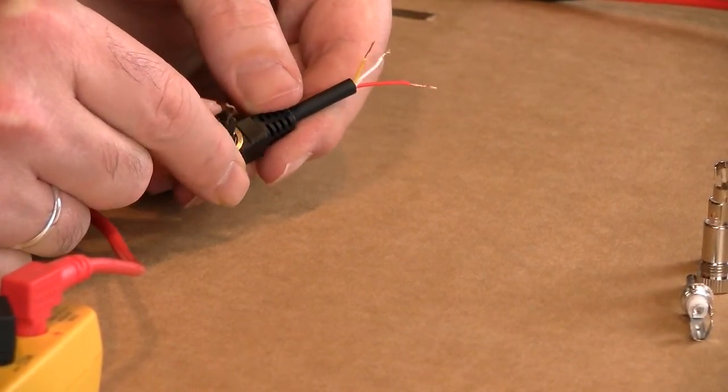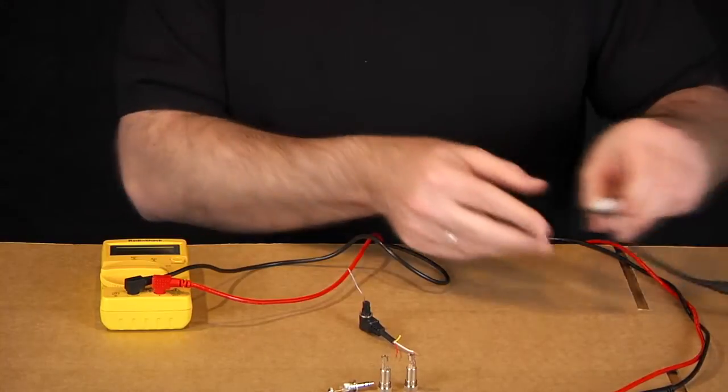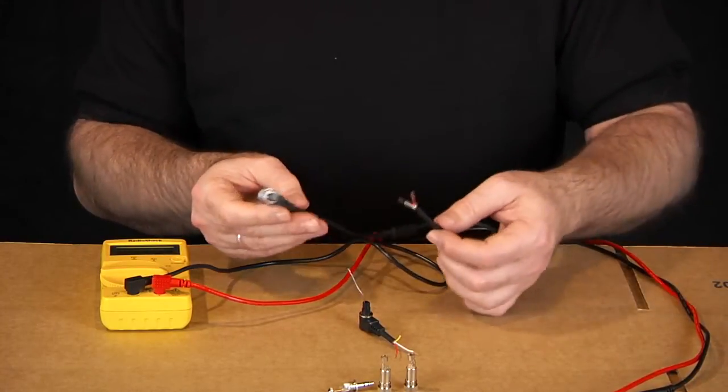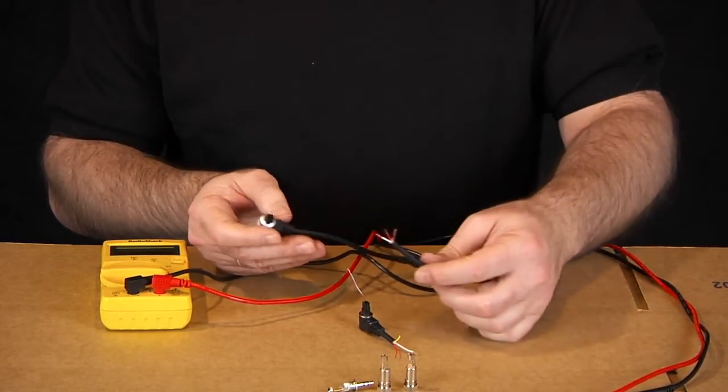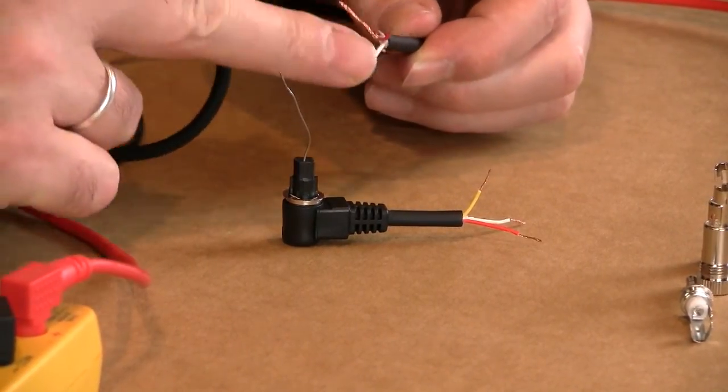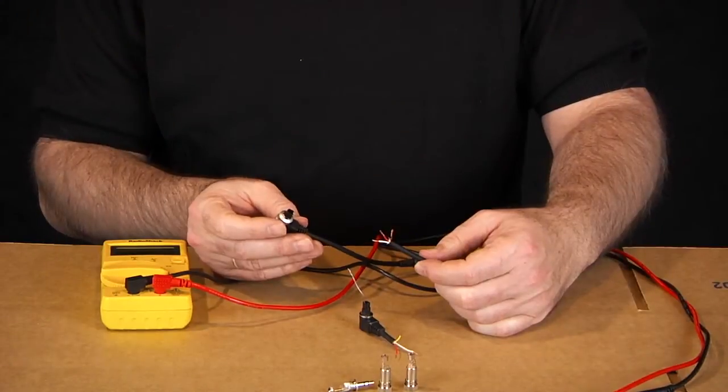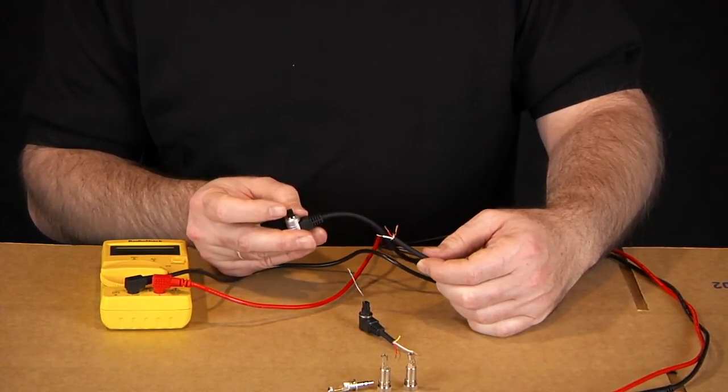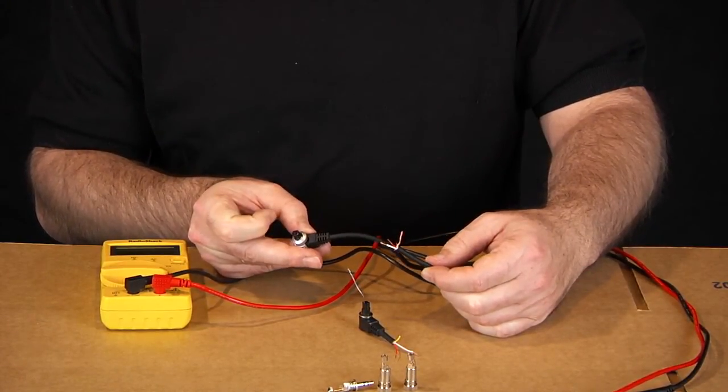And then you're going to want to make a note of that. Now what I found on the RS-80 was I had three colored wires. I have a red, I have a white, and I have a ground. And I made a note to which pin configuration each one of those goes to.